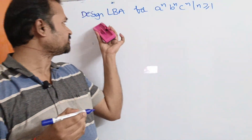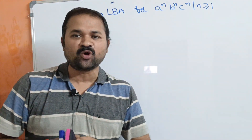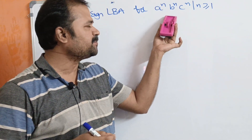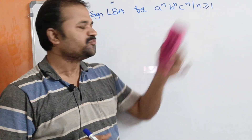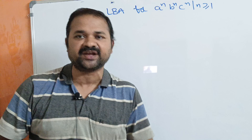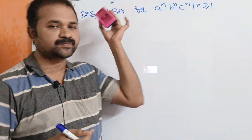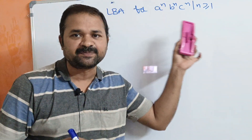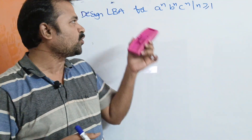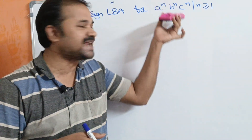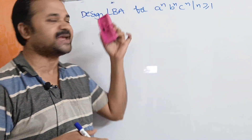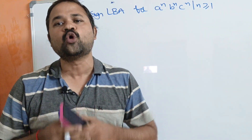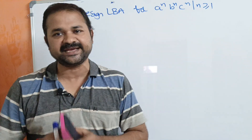Let's see this example. Design a linear bounded automata for the language A^n B^n C^n, where N is greater than or equal to 1. We know that PDA, that is pushdown automata, cannot accept this language. So if we can prove that this language is accepted by LBA, then we can say that linear bounded automata is more powerful than the PDA.